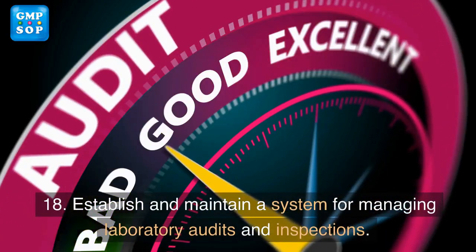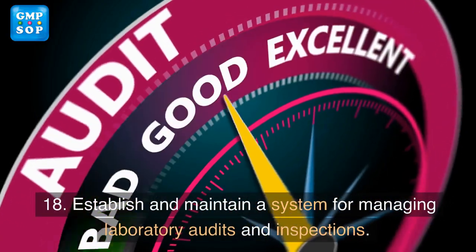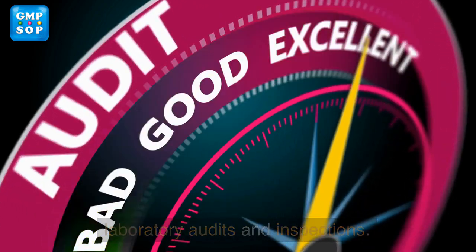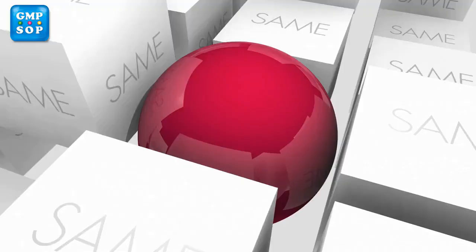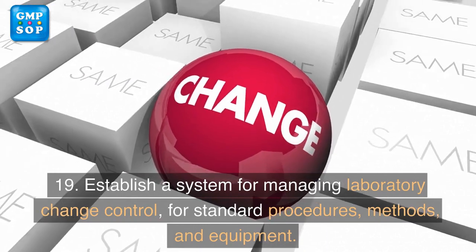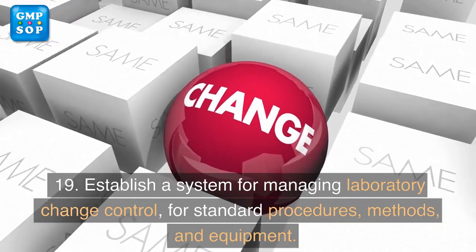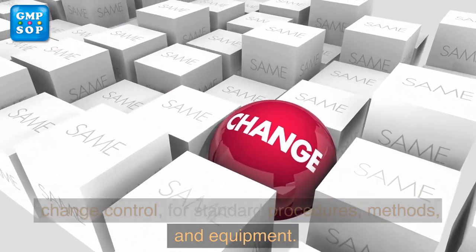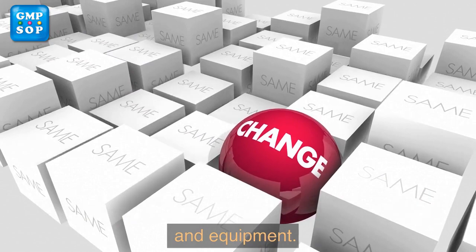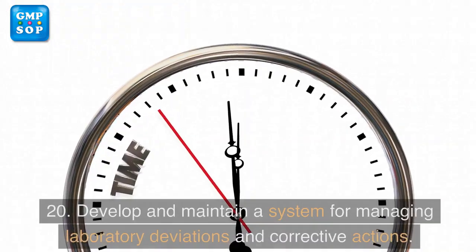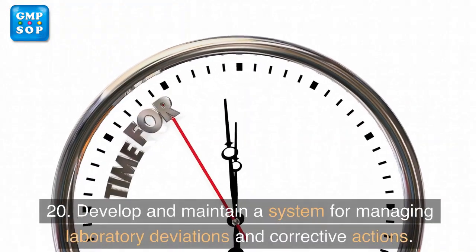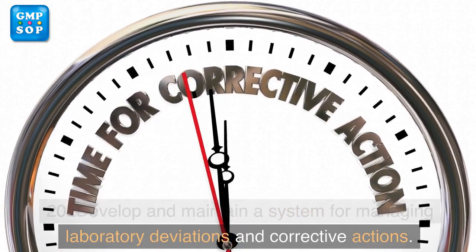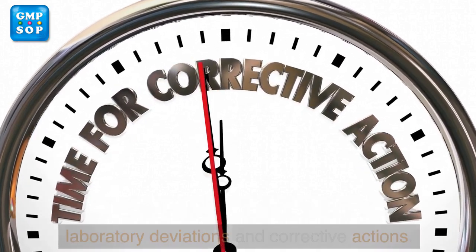Rule 18: Establish and maintain a system for managing laboratory audits and inspections. Rule 19: Establish a system for managing laboratory change control for standard procedures, methods, and equipment. Rule 20: Develop and maintain a system for managing laboratory deviations and corrective actions.